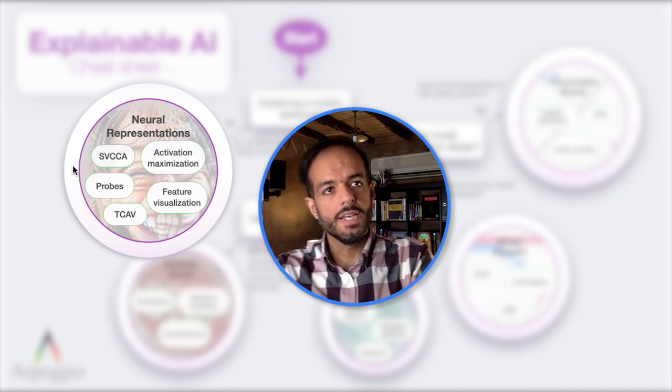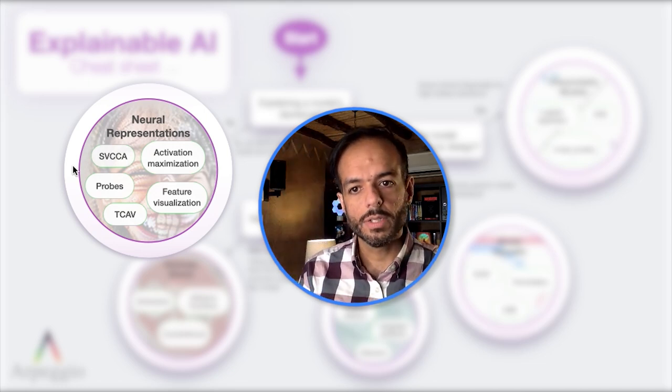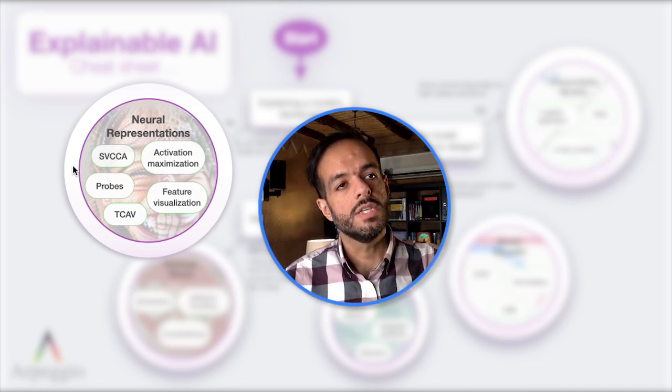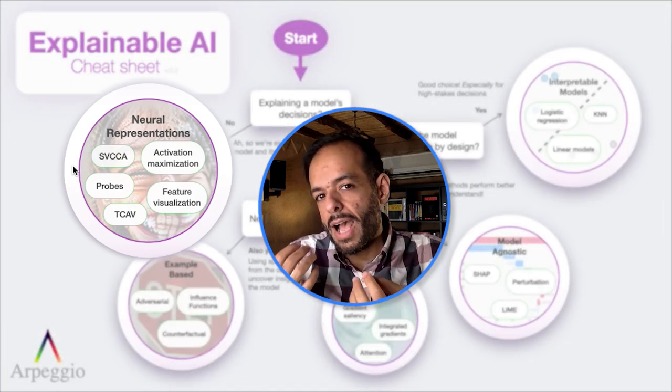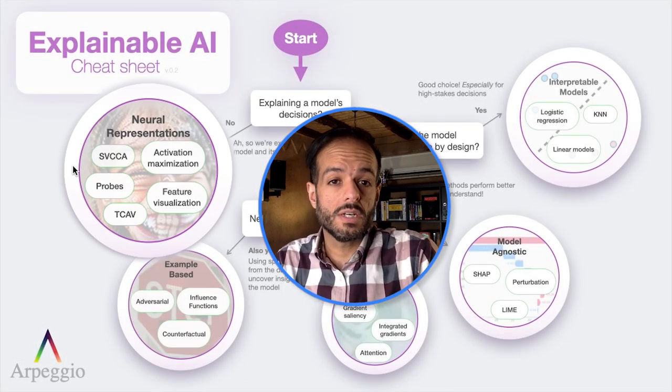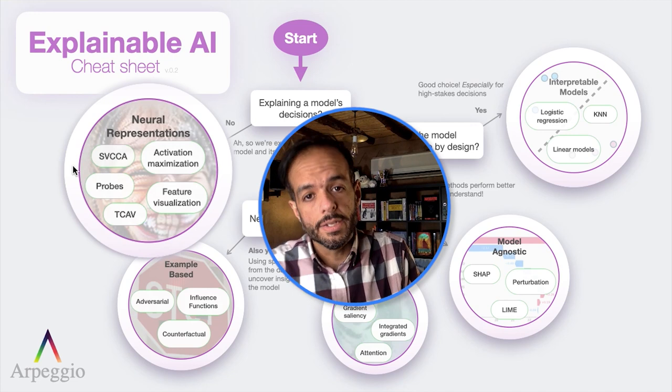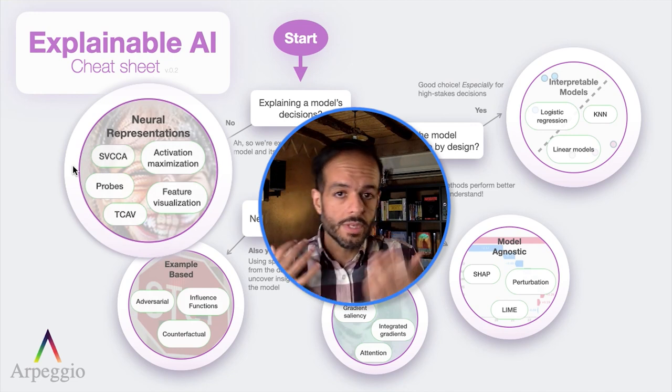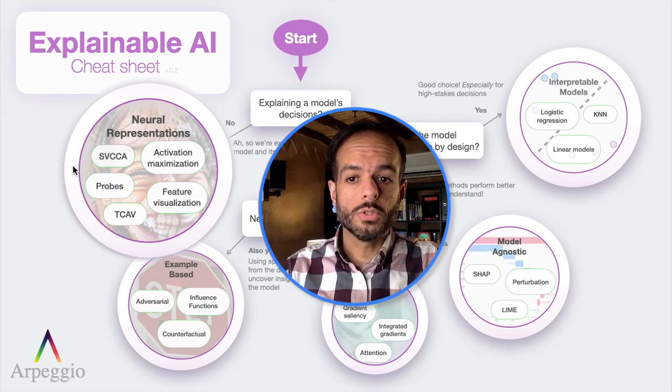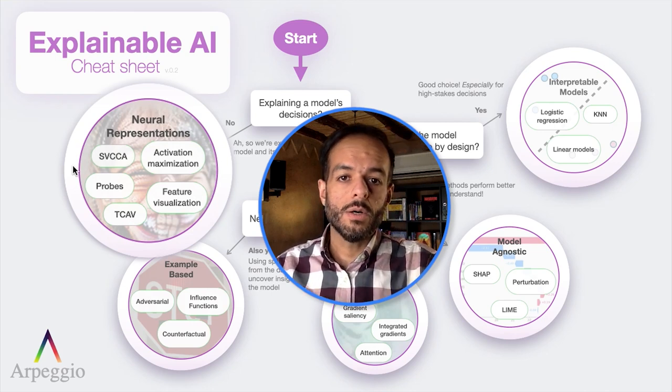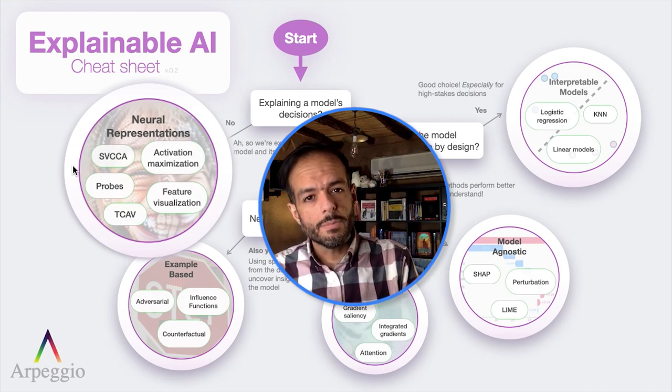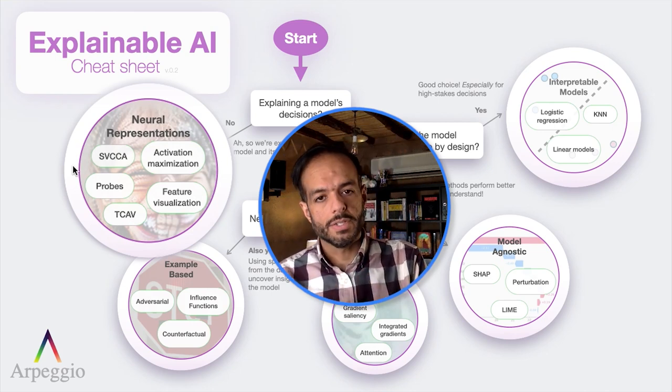There's PWCCA and CKA that we'll touch on. More than discussing how they work, this video will be discussing their application in machine learning research and how these were used as tools to tell us how models represent their inputs and how to compare various representations.